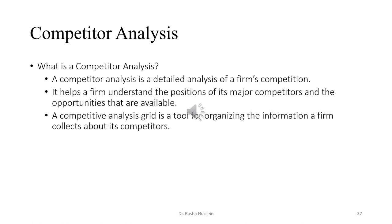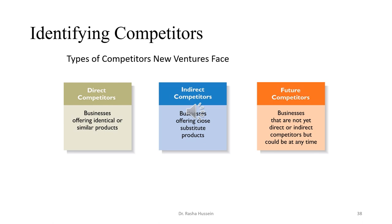Now we commence the second part of this chapter: competitor analysis. A competitor analysis is a detailed analysis of a firm's competition — it helps a firm understand the positions of its major competitors and the opportunities that are available. A competitive analysis grid is a tool for organizing the information a firm collects about its competitors. There are three types of competitors a new venture may face: direct competitors, indirect competitors, and future competitors.